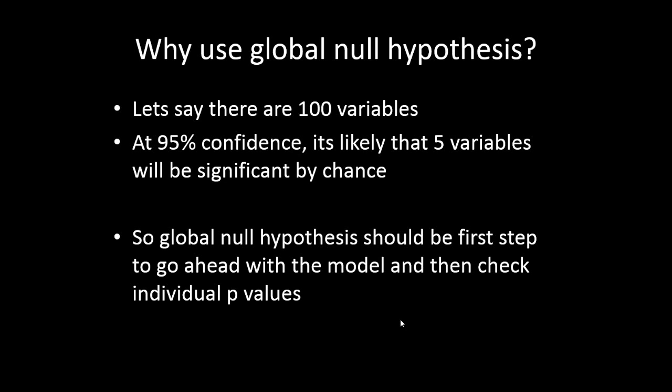This problem is not there with F statistics because F statistics keep adjusting themselves with respect to variables. When we are sure about the global null hypothesis - we're sure that at least one of the variables is significant - and then we find out some of the variables are significant in the model, then we are very sure about it. If we're not very sure at the global level, then we cannot go down.